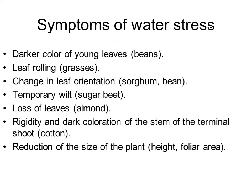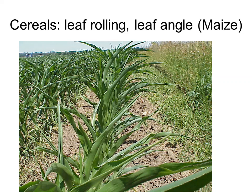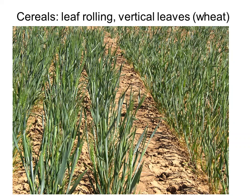Here you see an example of what we can observe in a stressed maize crop, where we see leaf rolling but also the leaf angle changes and tends to be more vertical. The same goes for a wheat crop under water stress — the leaves are rolling and also have a more vertical appearance.